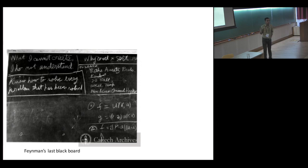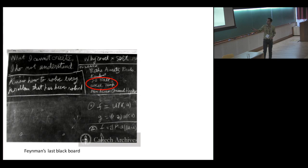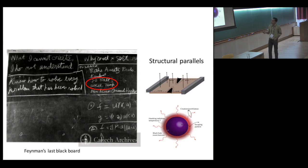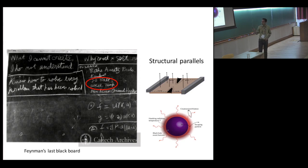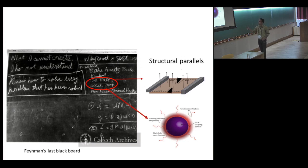Now we'll move to a completely different place — Feynman's last blackboard. There are a lot of amazing things written there, but we'll focus on two: '2D Hall' and 'acceleration temperature.' I'm not sure whether Feynman was thinking about quantum Hall as such, since even fractional quantum Hall was already discovered by the time he passed away. Acceleration temperature refers to what's called the Unruh effect and the associated Hawking radiation. What we'll be doing is trying to see some structural parallels between these two completely different platforms.